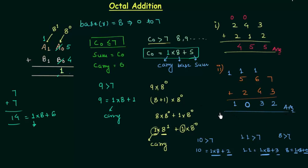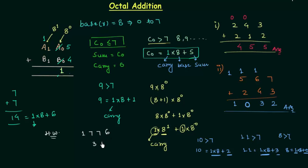So this is how you perform octal addition. I think you now have a clear view on octal addition and why carry is generated. Now we will move to the homework problem. The 1st octal number is 1, 7, 7, 6 and the 2nd octal number is 3, 4, 5. Once you have your answer, post it in the comment section. This is all for this presentation — see you in the next one.